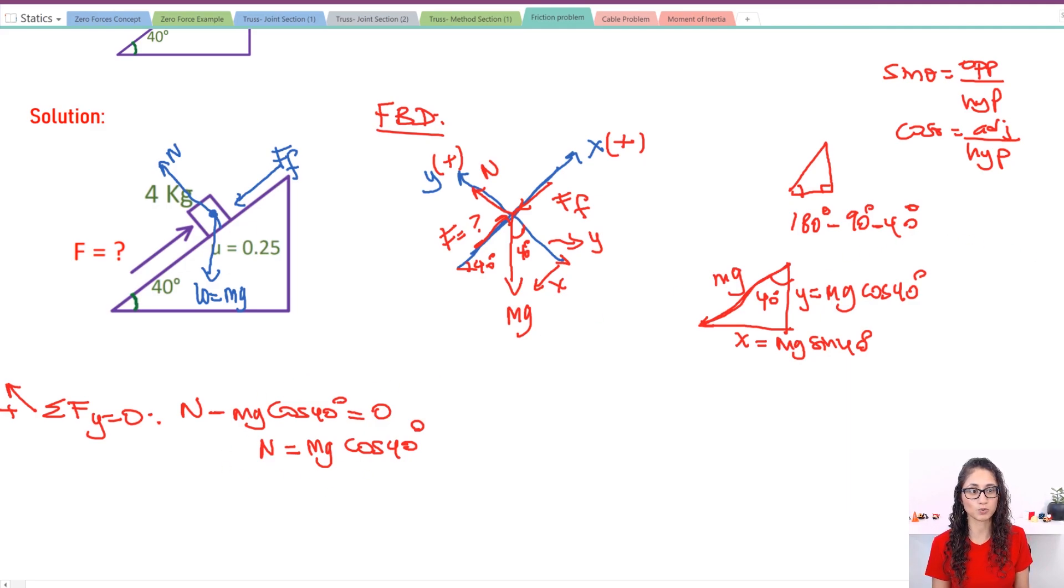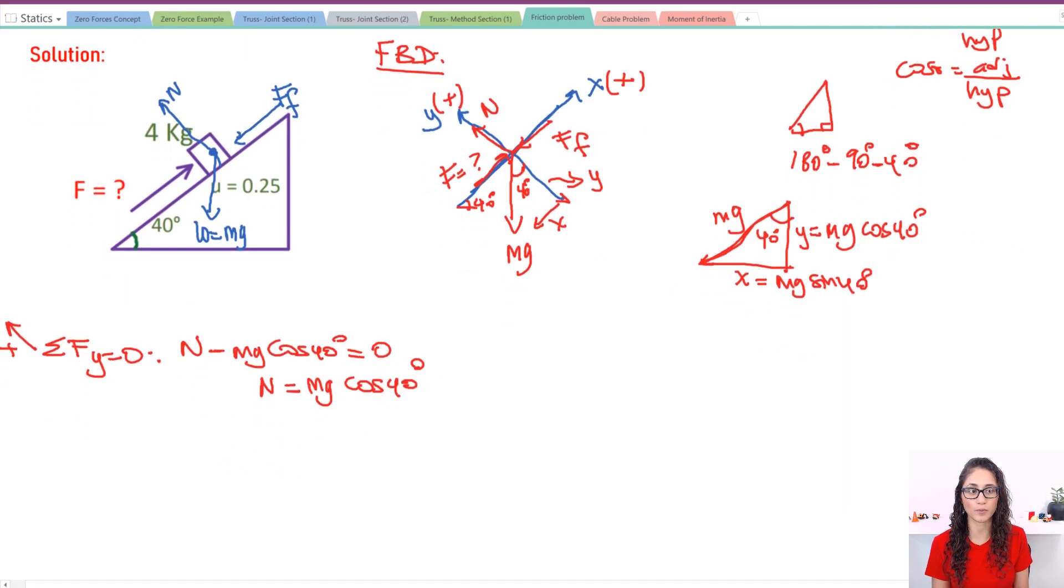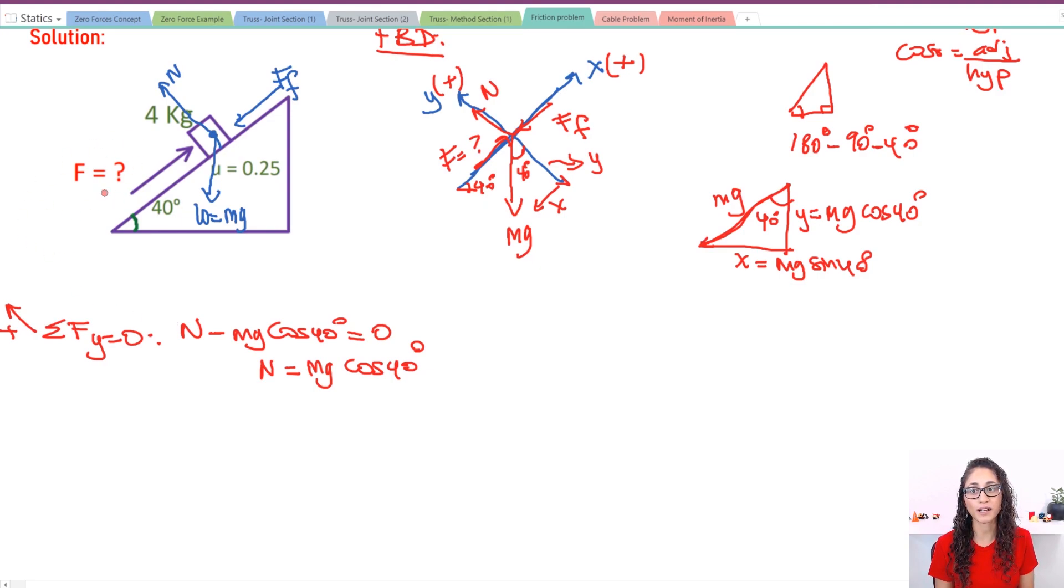So let's not calculate this yet because we don't really care about calculating this. We still want to find F, right? So let's do summation of the forces on the X equals to zero. Now this way is my positive direction for X. So what do we have? I have F which is positive. Then I have minus the friction force because it's going the opposite direction of our sign. So it's a minus. And then same thing here for the mg sine theta it's going to be negative because it's going the opposite direction. So I have minus mg sine 40 is equal to zero.